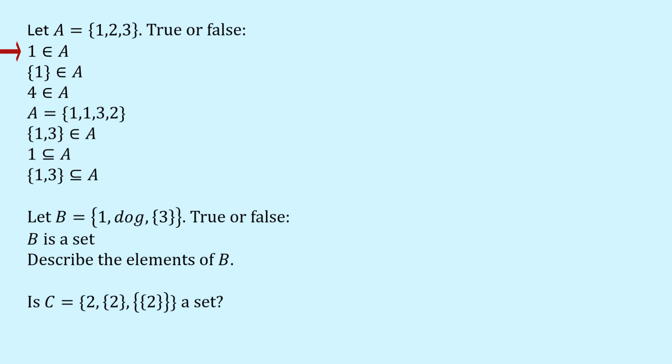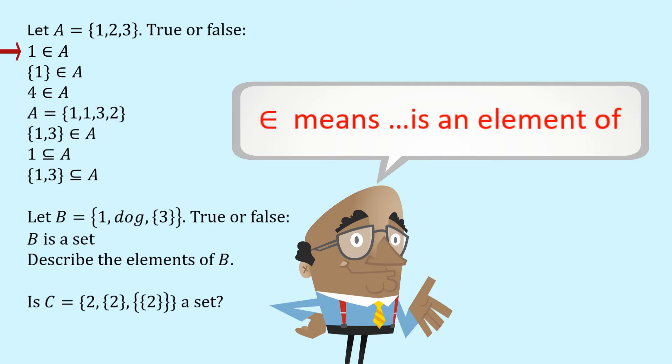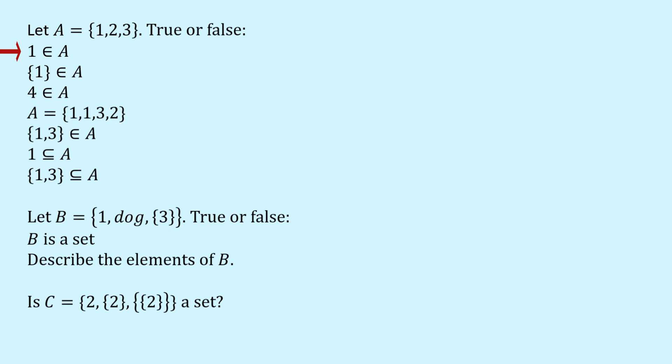Is this first statement true or false? Well what does this little symbol mean? It's read as is an element of. So the statement is 1 is an element of A. And I just said before that A contains three elements the numbers 1, 2 and 3 and so certainly 1 is an element of A. This is true.